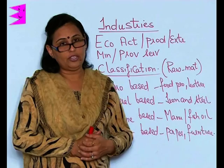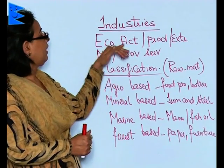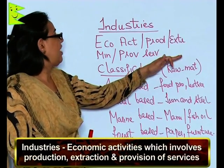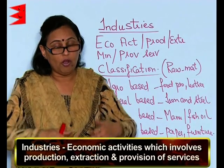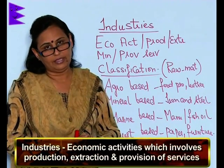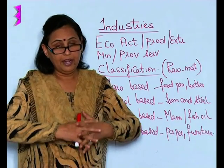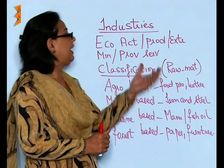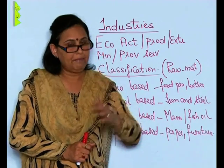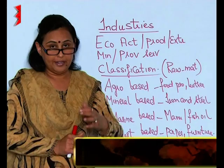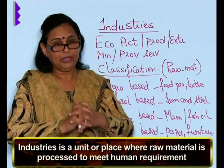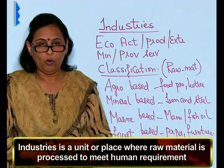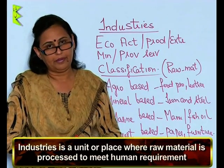The place where it is manufactured is also called industries. If you have to give an accurate definition, industries are the economic activities which involve the production, extraction, and also the provision of services. That is, not just manufacturing — even those sectors which are providing services can be categorized as industries. But in layman's terms, industries is a unit or place where the raw material is processed and given the shape required by human beings.